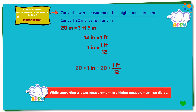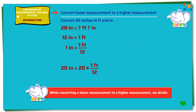Multiplying both sides by 20, we get 20 times 1 inch equals 20 times 1 foot divided by 12. 20 times 1 inch equals 20 inches. We divide 20 by 12: write 12 outside the bracket and 20 inside. 12 divides 20 once and 8 is the remainder. We stop because 8 is less than 12. The quotient 1 is the feet and the remainder 8 are the inches. So 20 inches equals 1 foot 8 inches.